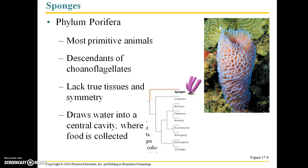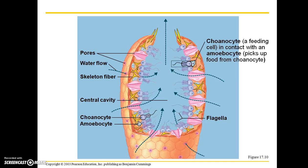Sponges belong to the phylum Porifera. They're the most primitive animals, descendants of choanoflagellates. They lack true tissues and symmetry, and they draw water into a central cavity where food is collected — they are sessile or sedentary marine animals. A schematic shows what a sponge looks like in detail: we have a choanocyte here, which is a feeding cell in contact with an amoebocyte that picks up food from the choanocyte. Little channels draw water and food particles in to the central cavity, and these choanocytes also have flagella.